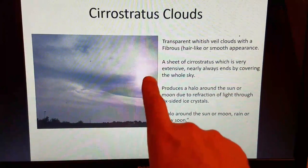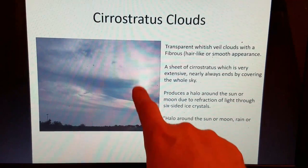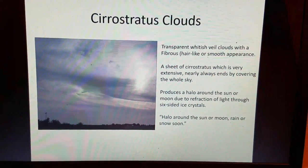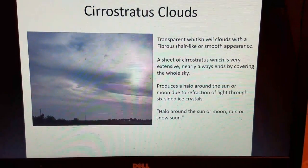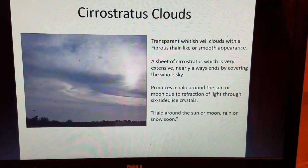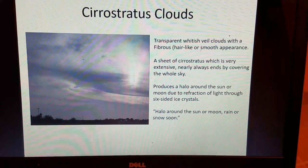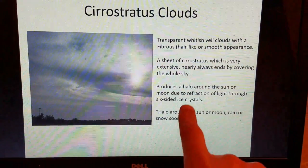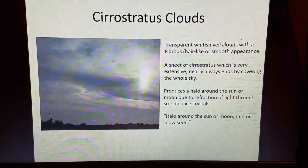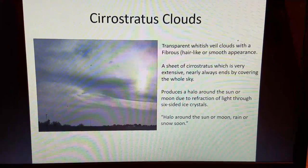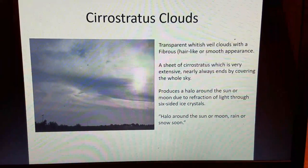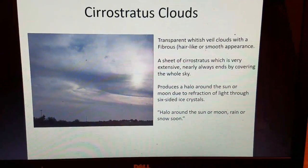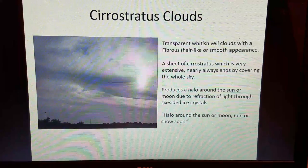Moving on to cirrostratus clouds: notice how the sun appears basically transparent through this sheet. Cirrostratus clouds are transparent, whitish veil clouds with a fibrous, hair-like, or smooth appearance. A sheet of cirrostratus is very extensive and nearly always ends by covering the whole sky. Importantly, cirrostratus produces a halo around the sun or moon due to the refraction of light — the bending of light through six-sided ice crystals. The old weather proverb says: halo around the sun or moon, rain or snow soon.